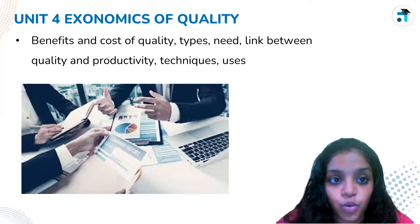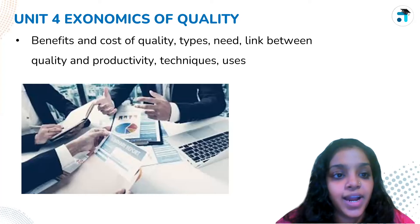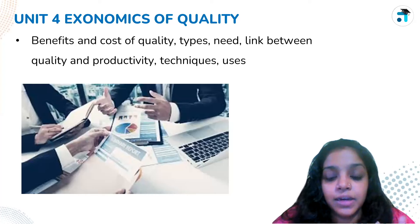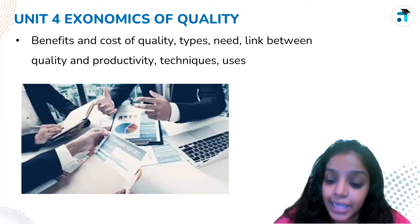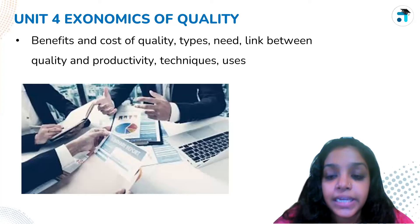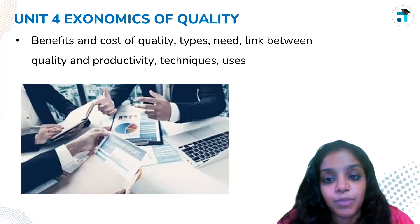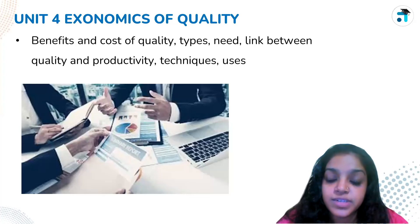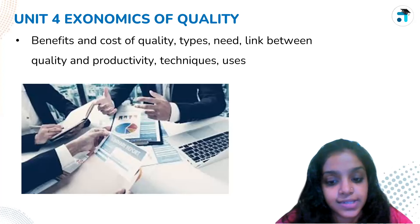Unit 4 is Economics of Quality. This covers quality benefits, cost of quality, types, need, and the link between quality and productivity — all discussed in this unit.